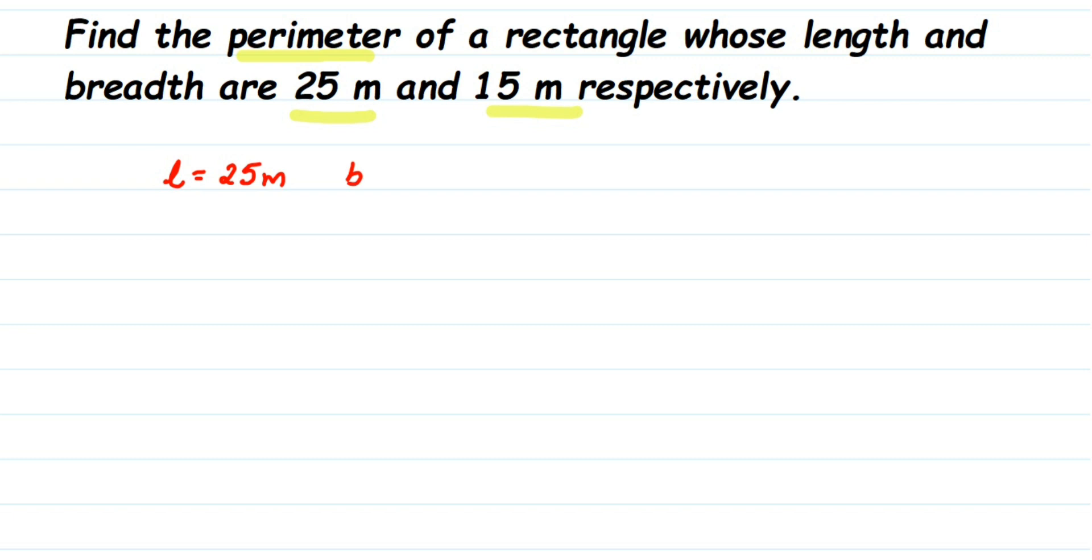We have to find out the perimeter. So what is the perimeter formula? Perimeter of rectangle is 2 into l plus b, so 2 into length plus breadth. Sometimes people also use 2 into l plus 2b. Even both formulas are the same; you can use any one of them.